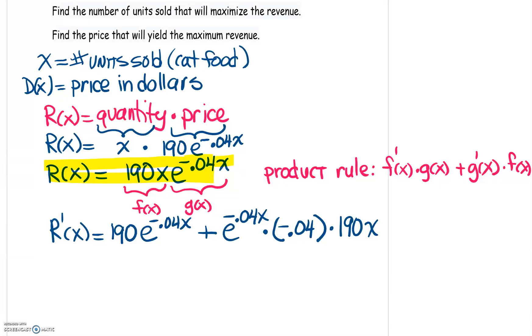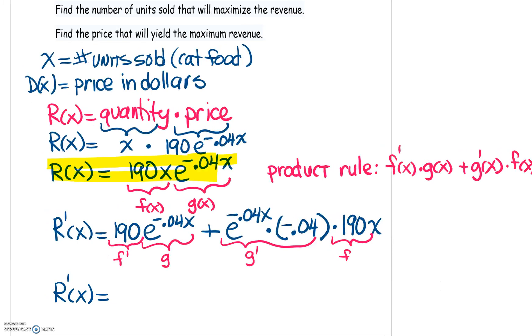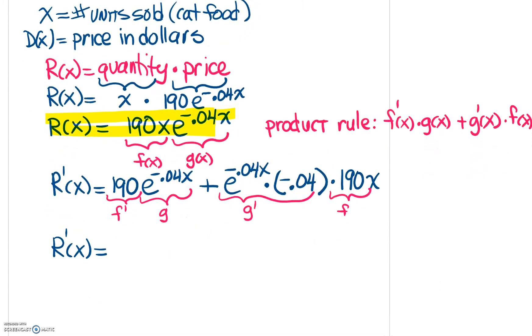So this is our product rule. So again, the 190 is the F prime. This is the G. This all right here is G prime. And this is your F. So simplifying that and factoring that. The derivative, we're going to factor this because our next step is going to be setting it equal to zero to find the critical points.